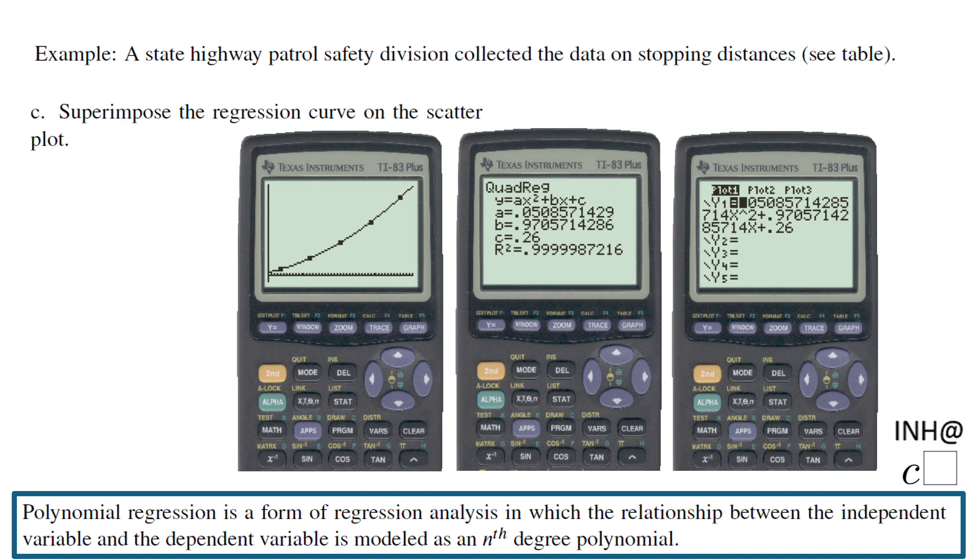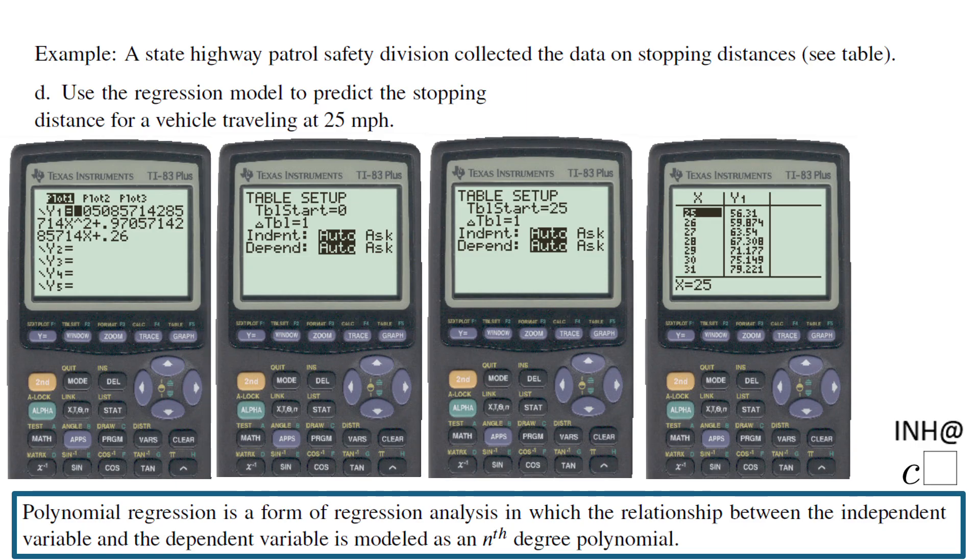Now on part C, if you remember, we asked to superimpose the regression curve on the scatter plot, which we already did. This is the quadratic regression again, this is the equation in the Y1 in case you need it. My last thing in this example is to show you how to use the calculator to get the value for a specific value of the input. In our case, we are asked to use this regression model to predict the stopping distance for a vehicle traveling at 25 miles per hour. So that means the x is 25.